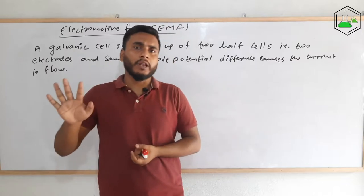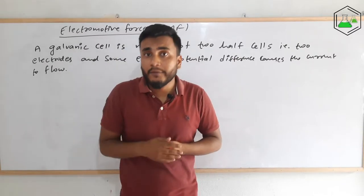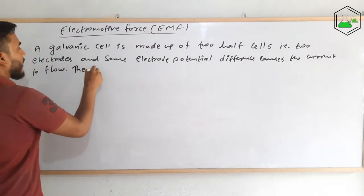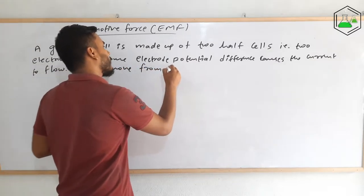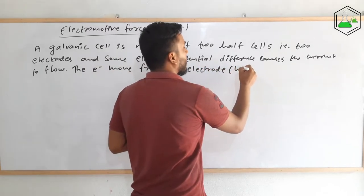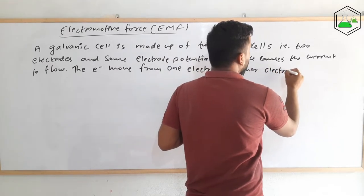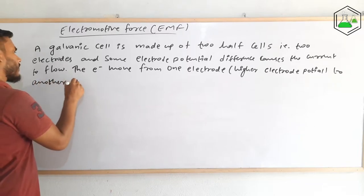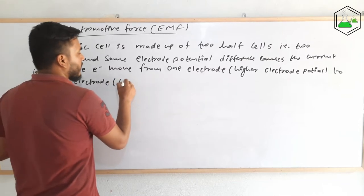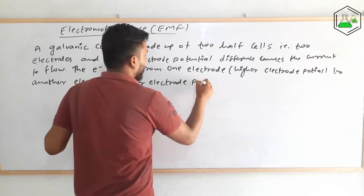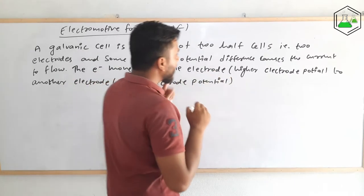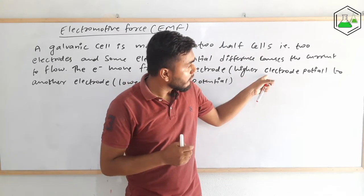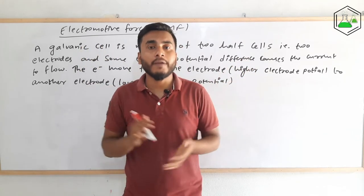Since the two electrodes have different electrode potentials, one of them must have a higher value and the other must have a lower value. The electrons move from the electrode with higher electrode potential to the electrode with lower electrode potential.